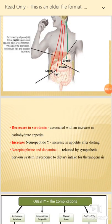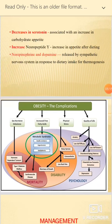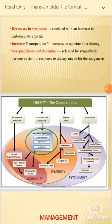Decreased serotonin levels are associated with increased carbohydrate appetite. Increased neuropeptide Y also increases appetite. Norepinephrine and dopamine are also responsible for thermoregulation and regulate fat storage in the body.